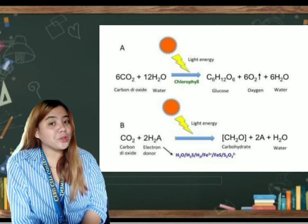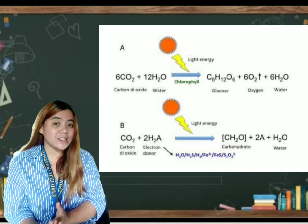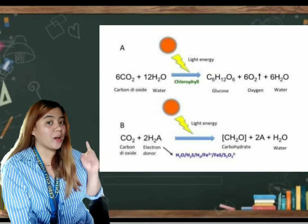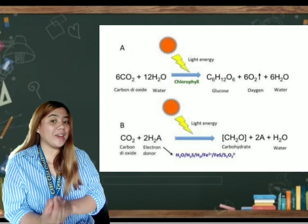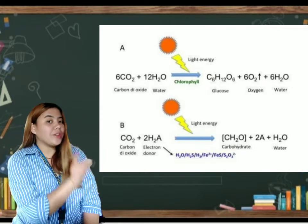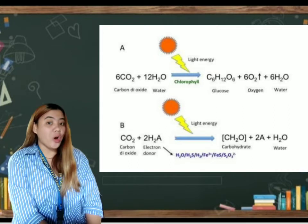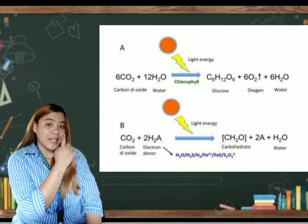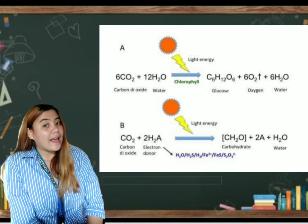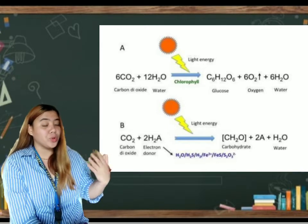So, class, oxygenic photosynthesis refers to the photosynthesis that occurs in plants, algae, and cyanobacteria, in which the final electron acceptor is water. On the other hand, anoxygenic photosynthesis refers to a form of photosynthesis used in certain bacteria. Basically, anoxygenic photosynthesis does not produce oxygen.